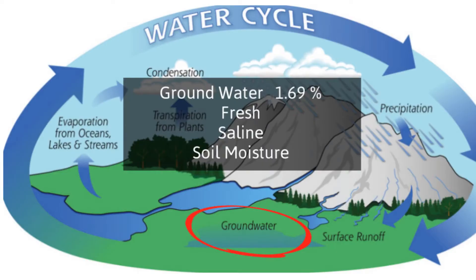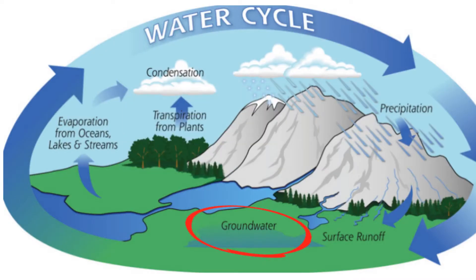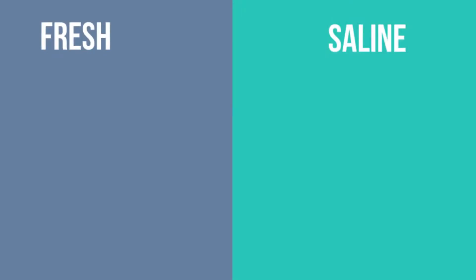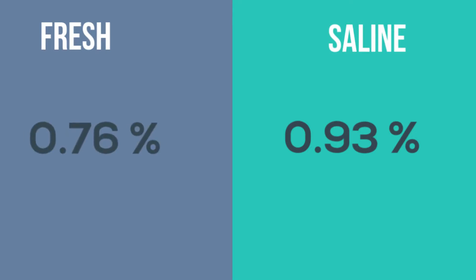1.69% is found in groundwater. Water that is found on land will pass through rock until this rock becomes saturated. The point where the porous rock and saturated rock meet is the water table. However, not all of this underground water is fresh water — 0.93% is salty or saline water, and 0.76% is fresh.